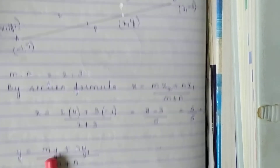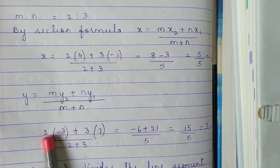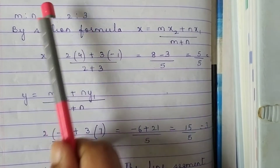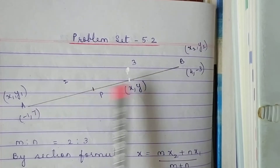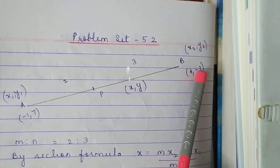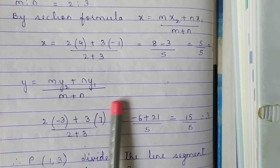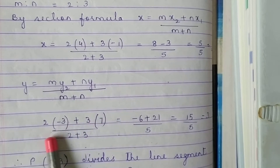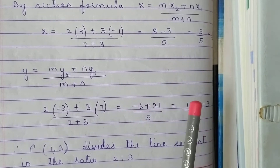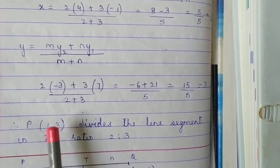Same method to find the Y coordinate: MY2 plus NY1 upon M plus N. M is 2, Y2 is minus 3; N is 3, Y1 is 7. So 2 into minus 3 plus 3 into 7 upon 5. That gives minus 6 plus 21 upon 5, which is 15 upon 5. My answer is 3. Therefore the coordinates of the point P are (1, 3). This divides the line segment in the ratio 2 is to 3.